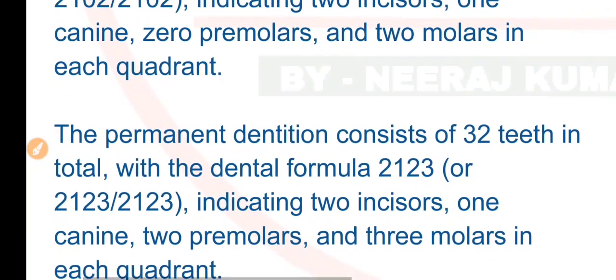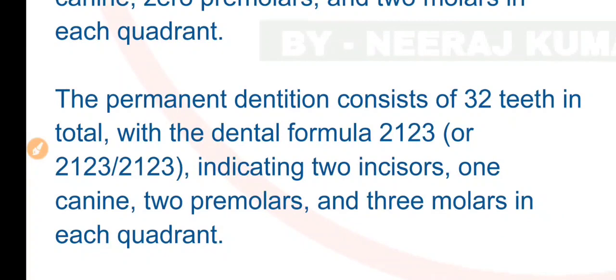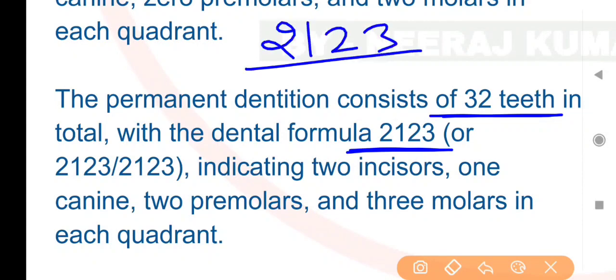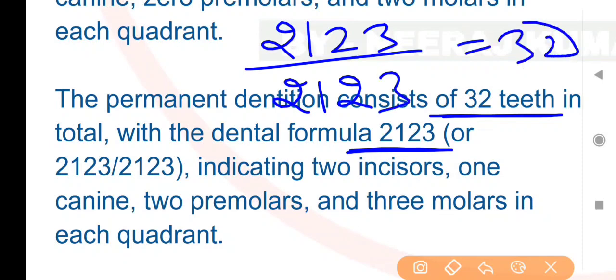Permanent teeth ki baat karein toh permanent teeth sankhya mein 32 hote hain. Inका dental formula hai 2123/2123 — yahan pehle do incisors, phir canine, phir premolars, aur last mein molar teeth hain. Total number 32 hota hai.